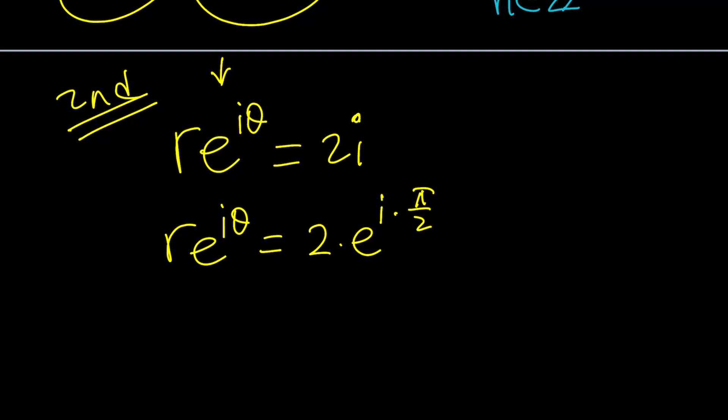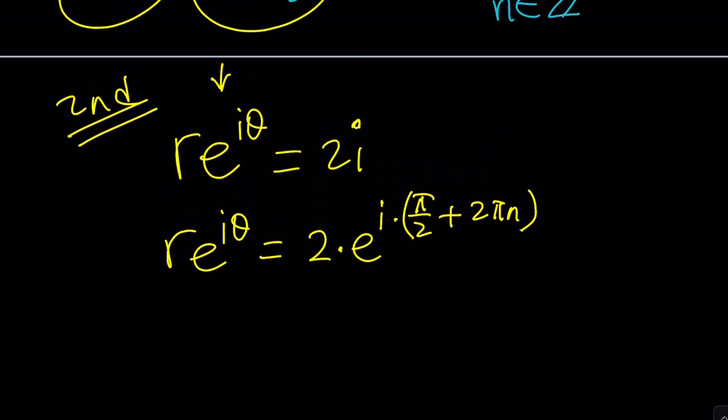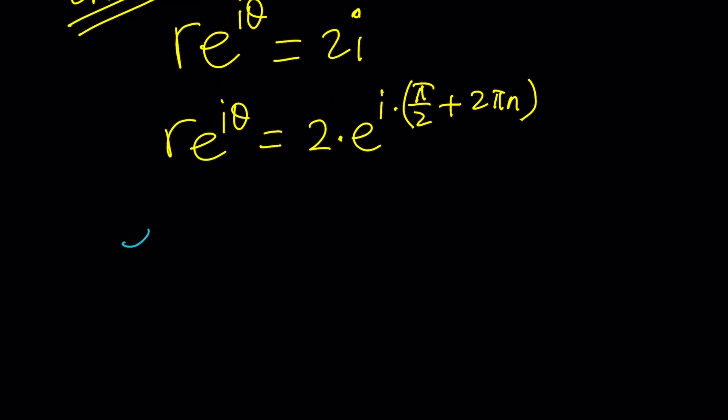But let's go ahead and generalize this, because instead of pi over 2, I can always write pi over 2 plus 2 pi n. Again, n is an integer. So the same question arises. Can we safely say that r equals 2 and theta equals pi over 2 plus 2 pi n from here? Or do we need to do a little bit of work? So let's go ahead and do some work. I'm going to put the E's on the same side.